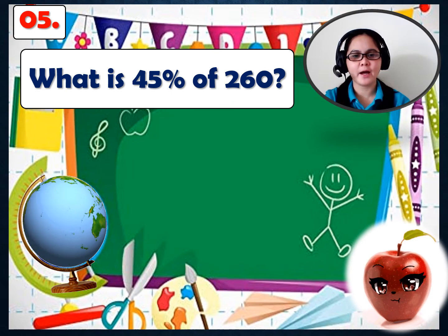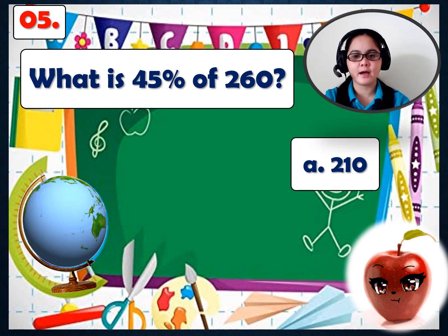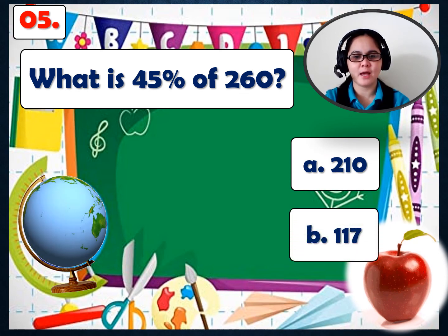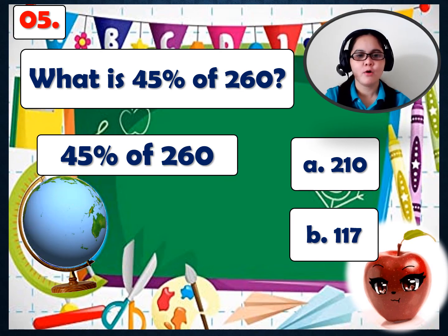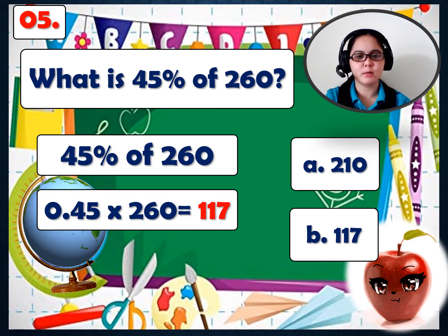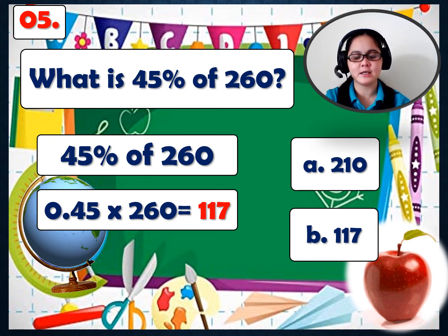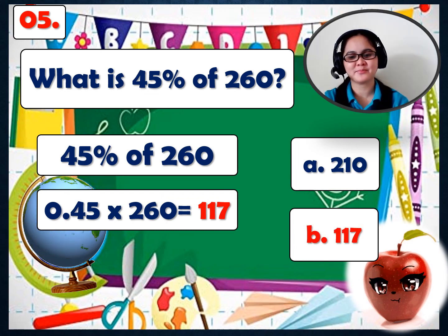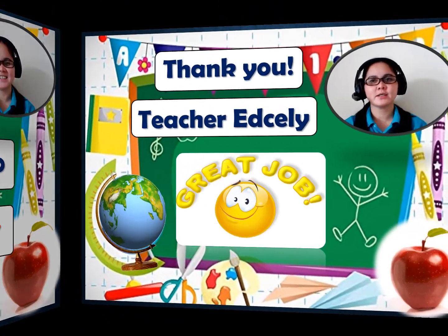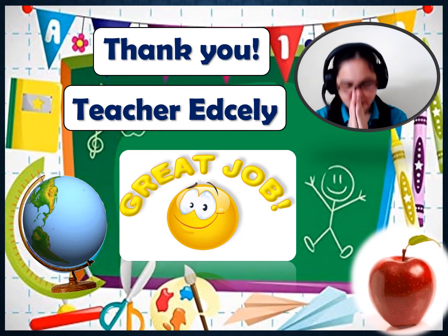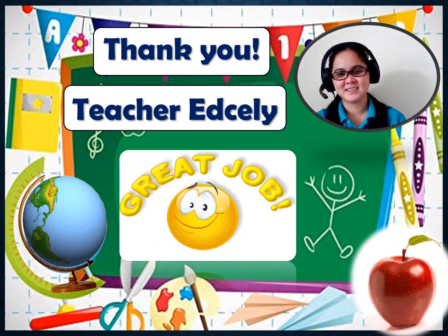Number 5: What is 45% of $260? A: $210, or B: $117. Let's solve using decimal form: 0.45 times $260 equals $117. So the correct answer is letter B — $117. That would be all for today. Thank you, I'll see you next time.